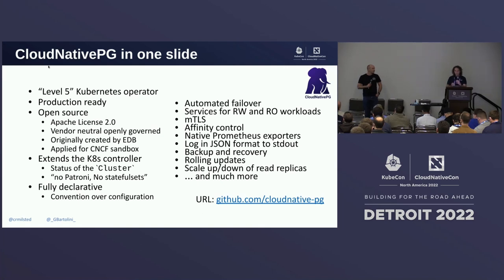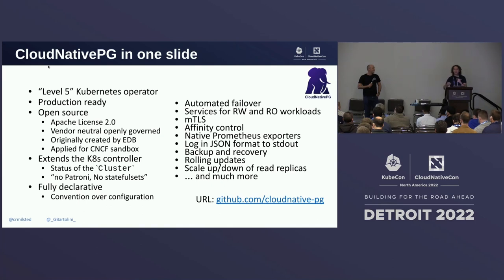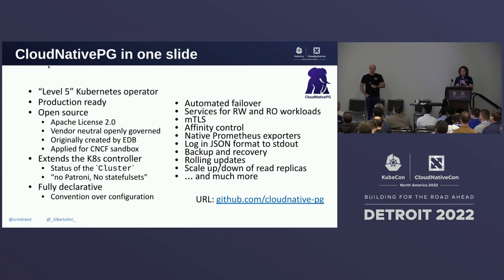We've applied to the CNCF sandbox and are currently in the review process. On the technical side, a key differentiator is that Cloud Native PG directly extends the Kubernetes controller by defining a custom resource called Cluster that manages the status of the cluster, and relies on a component called InstanceManager to control the underlying PostgreSQL instance. This includes failover management. As a result, we don't use a tool like Patroni or RepManager. In order to have full control on the Postgres cluster, we've made the decision not to rely on stateful sets, but to directly manage PVCs.